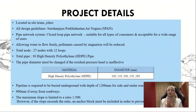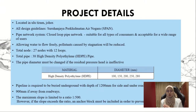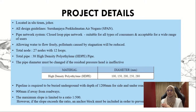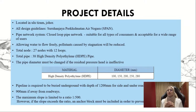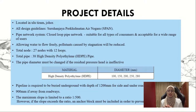For the project details, the proposed site is located in Ulu Tiram, Johor. All design guidelines used are in accordance with Suruhanjaya Perkhidmatan Air Negara, known as SPAN. For our design, we use a closed-loop pipe network system because it is suitable for all types of consumers and acceptable for a wide range of users.